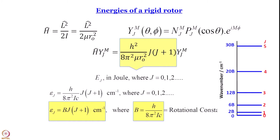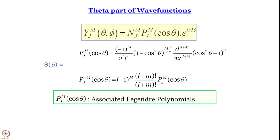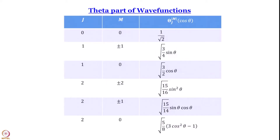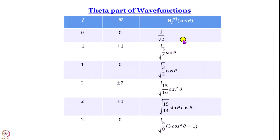This is where we got until the last module. Today let us focus on the theta part of the wave function — the associated Legendre polynomial multiplied by some constant. Here is a table of all the theta parts for j = 0, 1, and 2. The theta part depends on j and |m|: it does not matter whether m is positive or negative, you get the same theta part. For j = 0, m = 0, the wave function is just a constant.